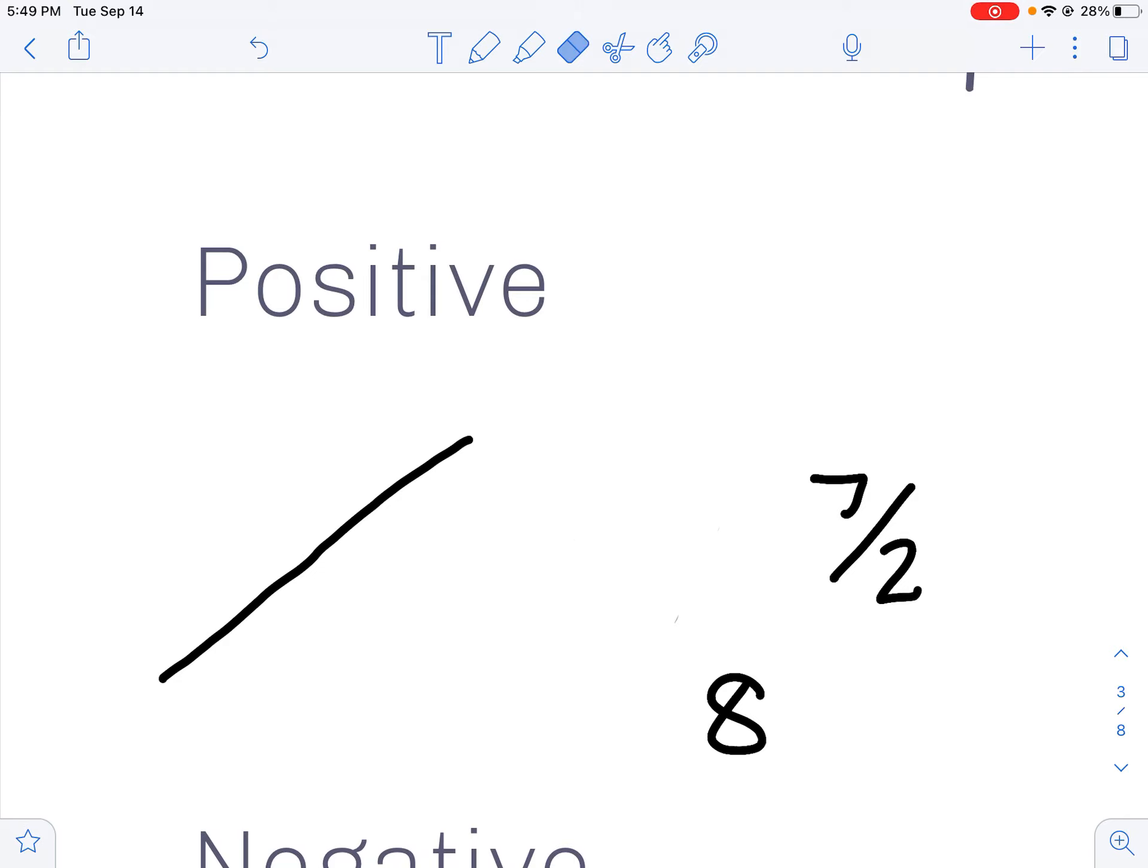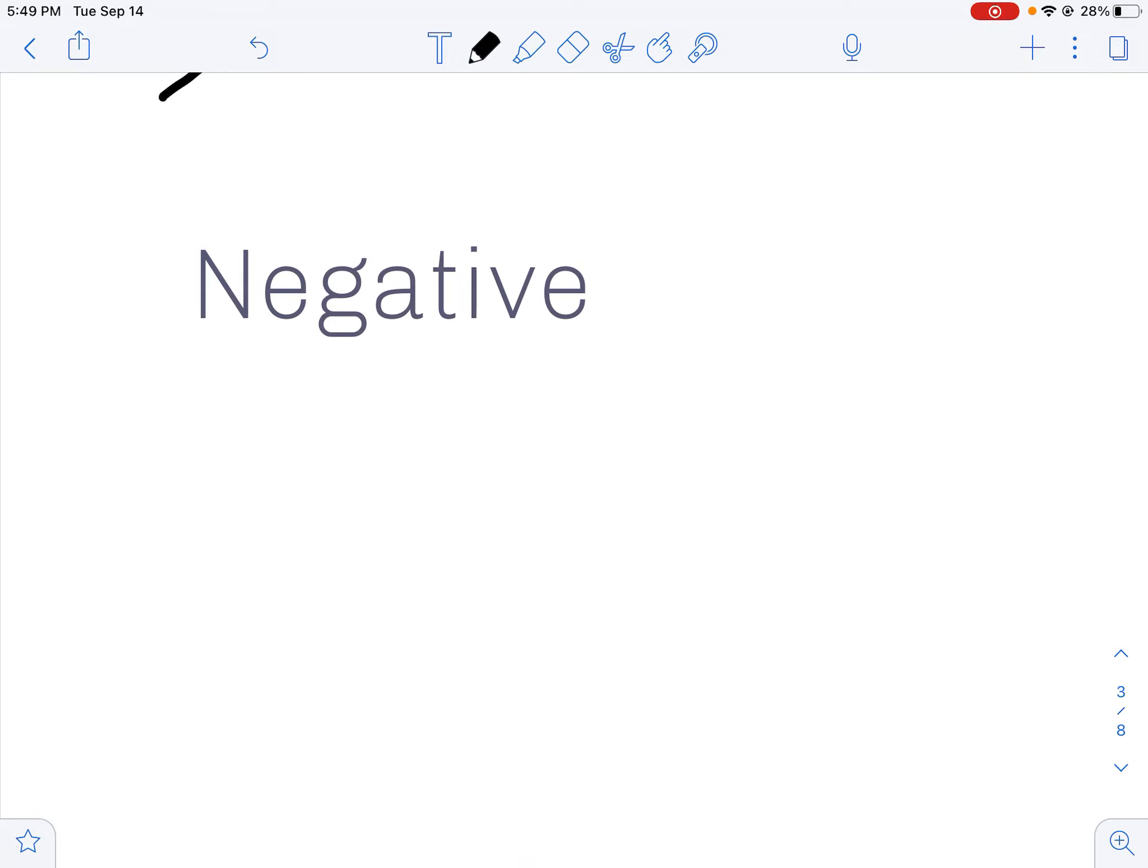Your negative slope then will fall as you move from left to right, and you will have negative two-thirds or negative 5 or whatever the case may be. We always write the negative in the numerator, even if when you do your calculation you get 7 over negative 2, you'd move that negative up.